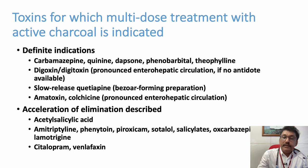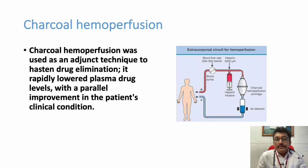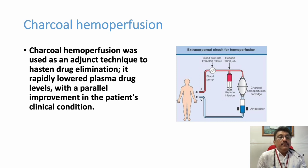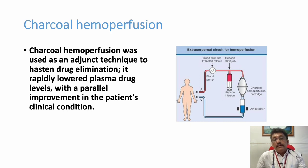Charcoal hemoperfusion is another important method of toxin removal requiring a dialysis machine. It is used as adjunctive therapy to remove drugs from the blood. Blood is passed through a cartridge containing activated charcoal using a dialysis machine. It rapidly lowers plasma drug levels with parallel improvement in the patient's clinical condition.